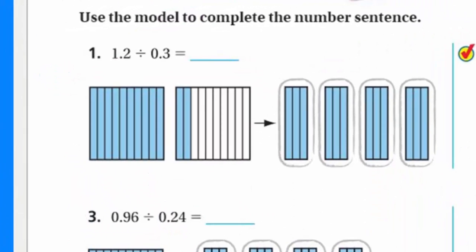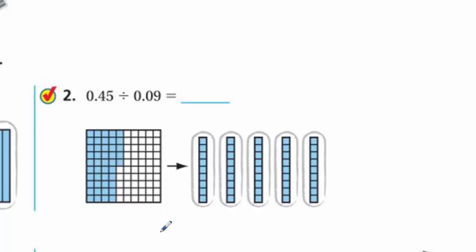Share and Show — good opportunity to stop the video, go ahead and do this work, then turn it back on and see how you did. Number one: one and two-tenths divided by three-tenths. Modeling shows the one and two-tenths, and we're making groups of three-tenths in each group — we have four. Number two: forty-five hundredths divided by nine hundredths in each group — it looks like ten but it's nine — we end up with five groups.